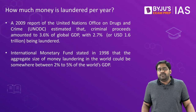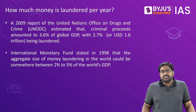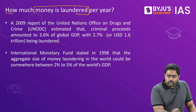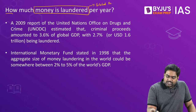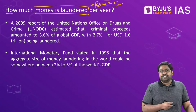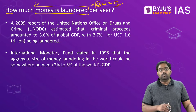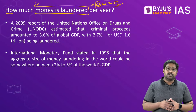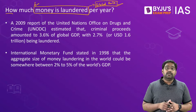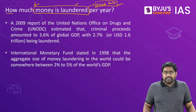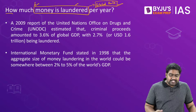Money laundering today has become a very serious economic threat affecting not just one country but the global economy itself, because it happens on a global scale. This process can't be pulled off by a few individuals or organizations alone — there is a global network, a global mafia involved, including corrupt officials, ministers, organized criminals, terror outfits, and even banking and financial institutions. It threatens global financial stability and also enables organized crime and terror financing.